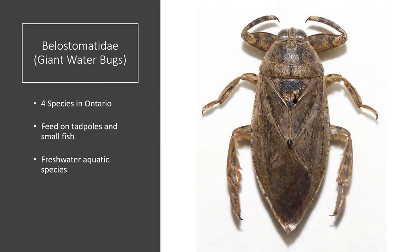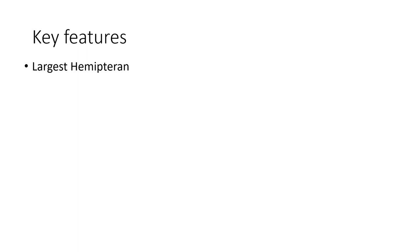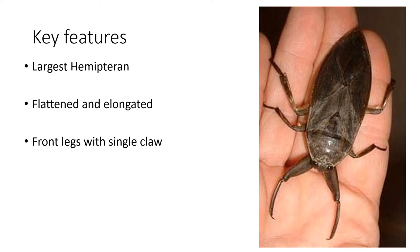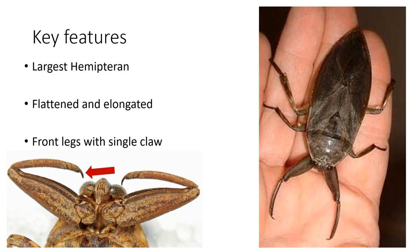Belostomatidae — giant water bugs. There are four species in Ontario. They typically feed on tadpoles and small fish, and they are freshwater aquatic species. Key features: they are the largest hemipteran, they are flattened and elongated, and their front legs have a single claw.